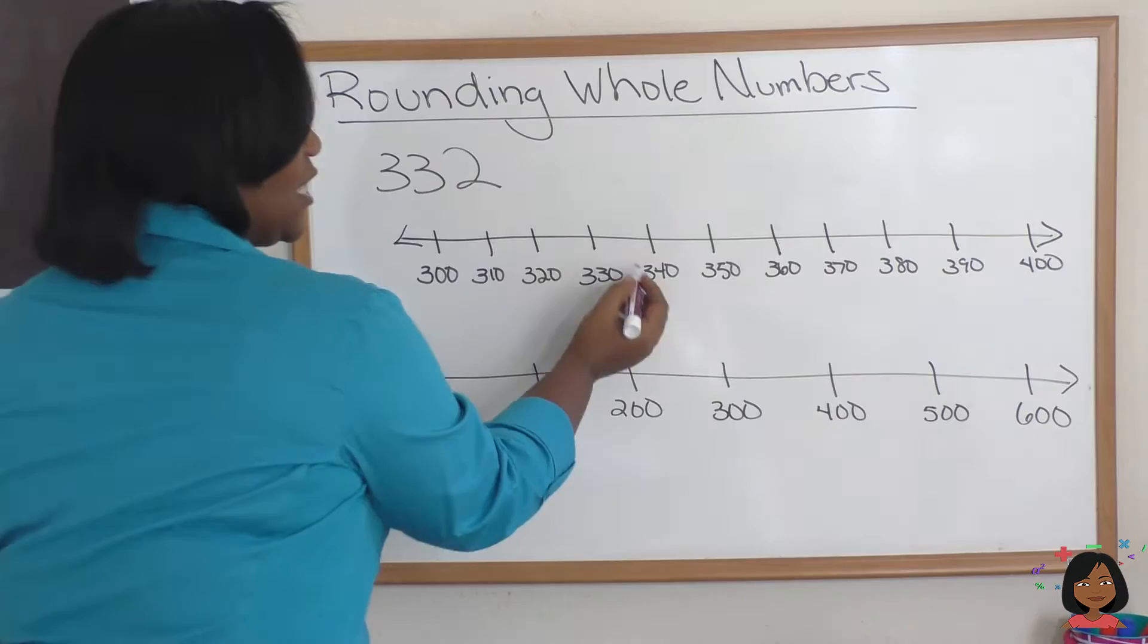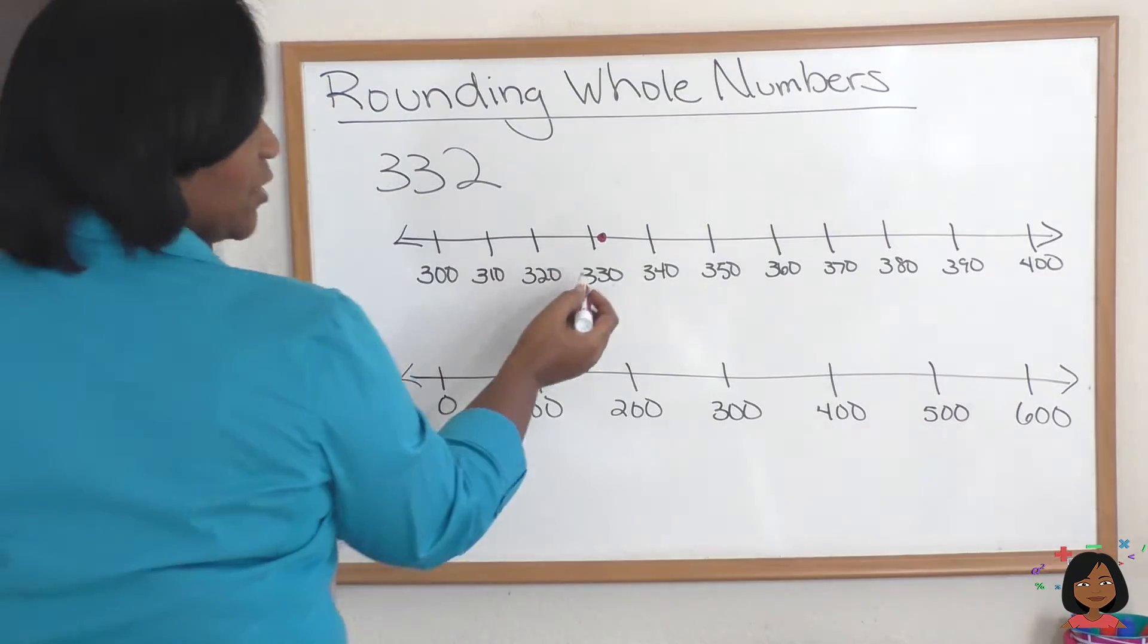Let's see where exactly it falls. I think it would fall closer to 330, because it's only two away, so I'm going to put a little red mark here. So if we were going to round 332 to the nearest tens column, our answer would be 330.